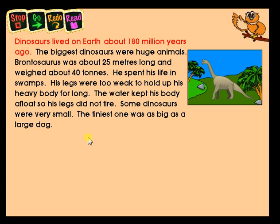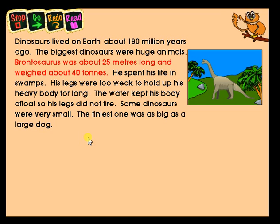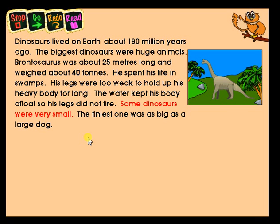Dinosaurs lived on Earth about 180 million years ago. The biggest dinosaurs were huge animals. Brontosaurus was about 25 meters long and weighed about 40 tons. He spent his life in swamps. His legs were too weak to hold up his heavy body for long. The water kept his body afloat so his legs did not tire. Some dinosaurs were very small. The tiniest one was as big as a large dog.